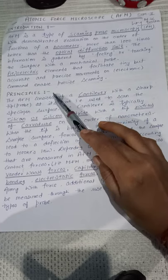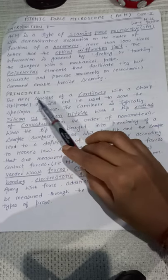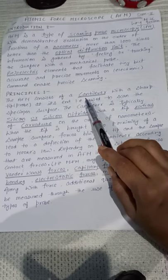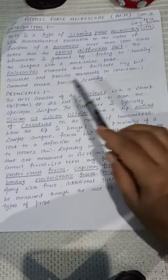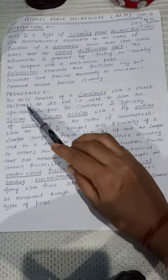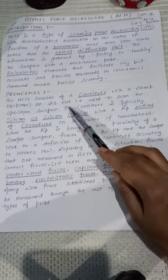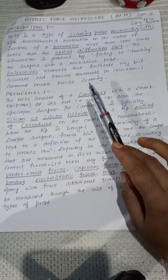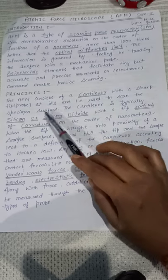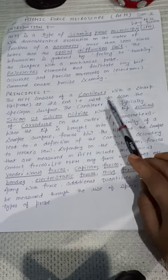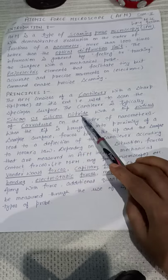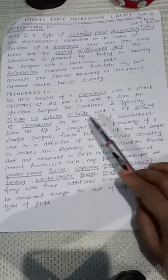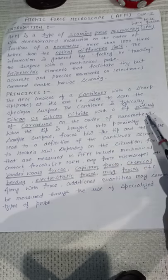Now come to the principle. The AFM consists of a cantilever with a sharp tip, also called probe at its end, and it is used to scan the specimen surface. The cantilever is typically silicon or silicon nitride with a tip radius of curvature on the order of nanometers.